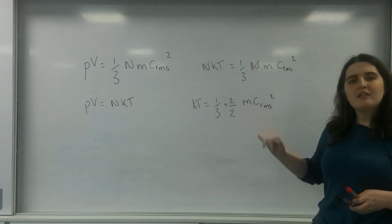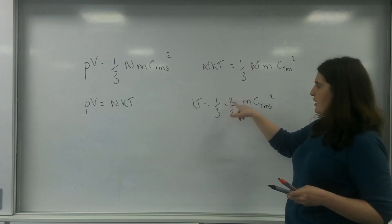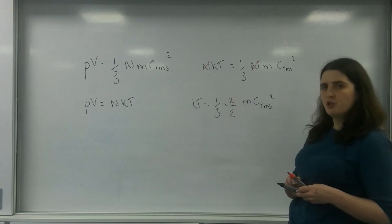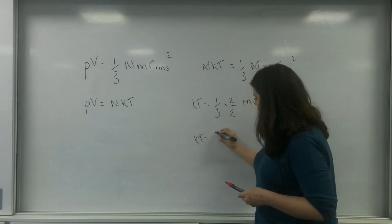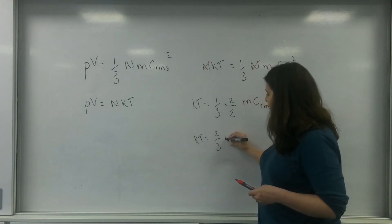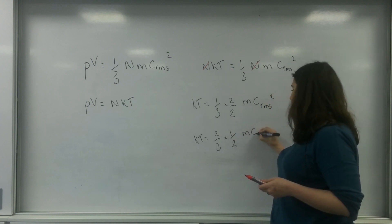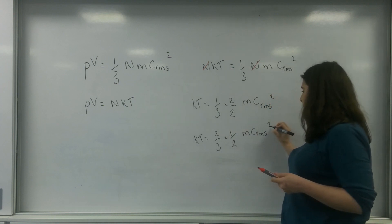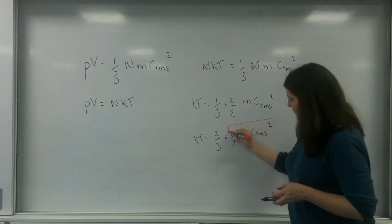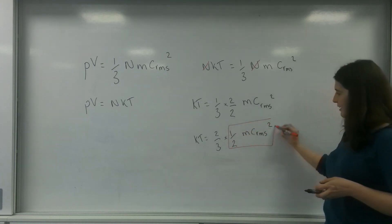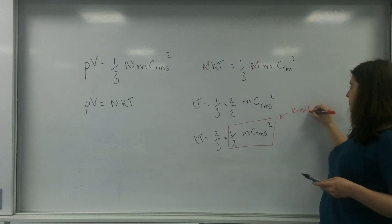Now I'm going to rearrange this. One-third times two over two also means KT equals two-thirds times by one-half MC_RMS squared. And I know that one-half MC² there — that is the kinetic energy of one molecule.